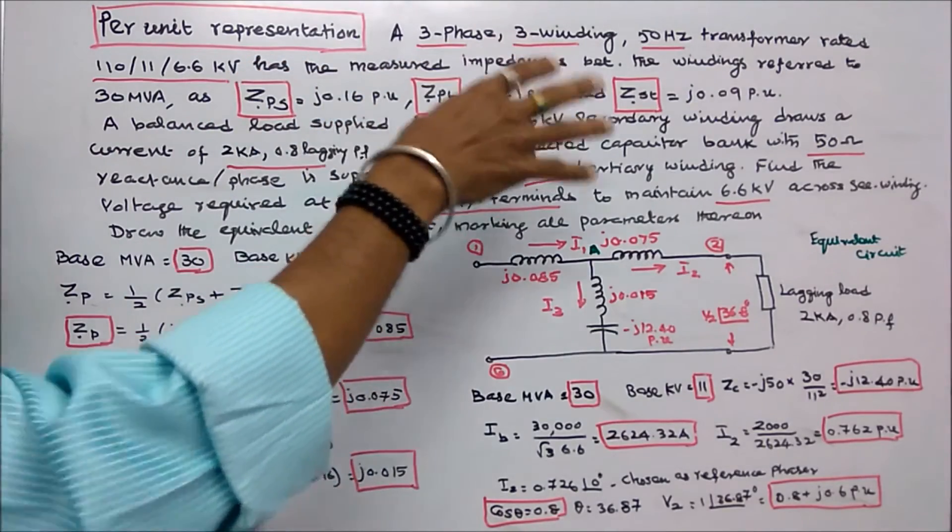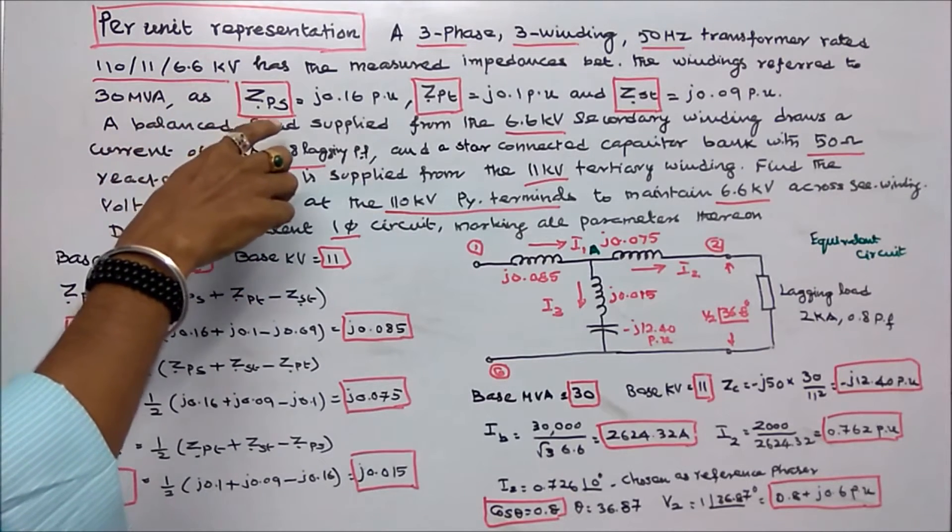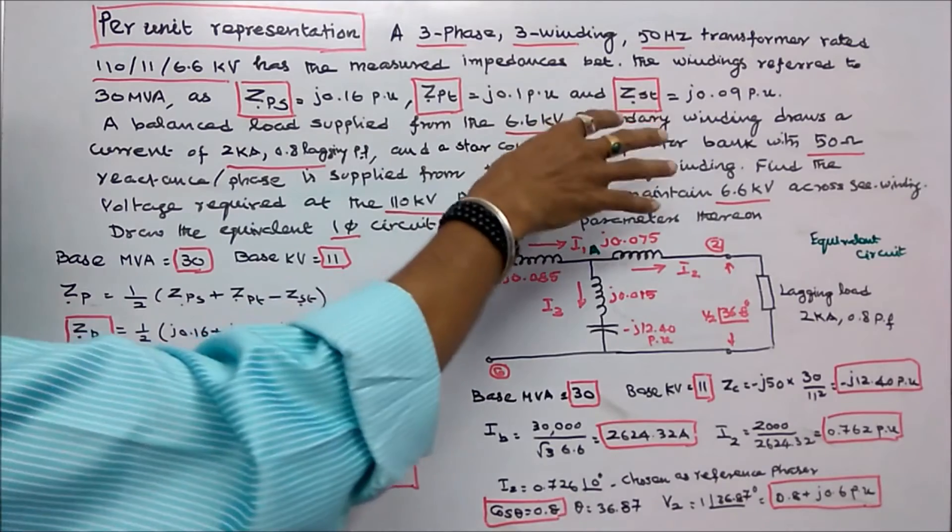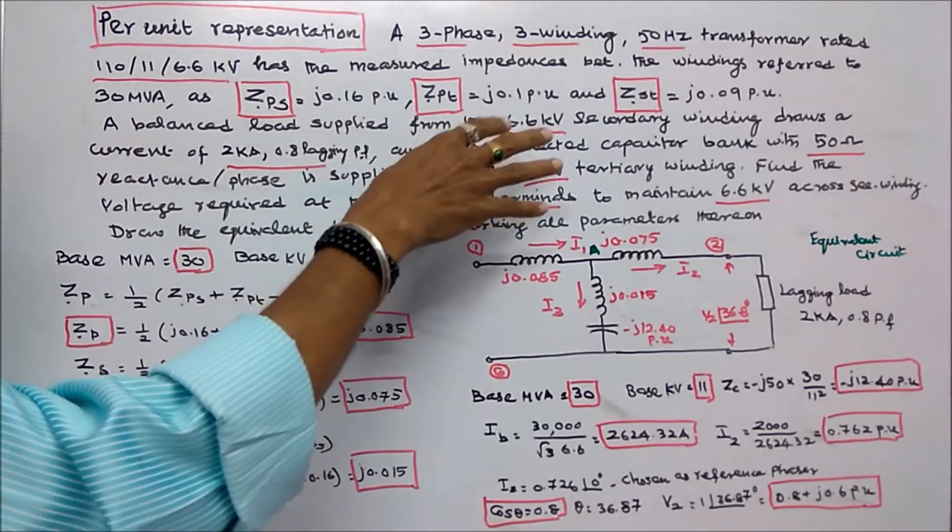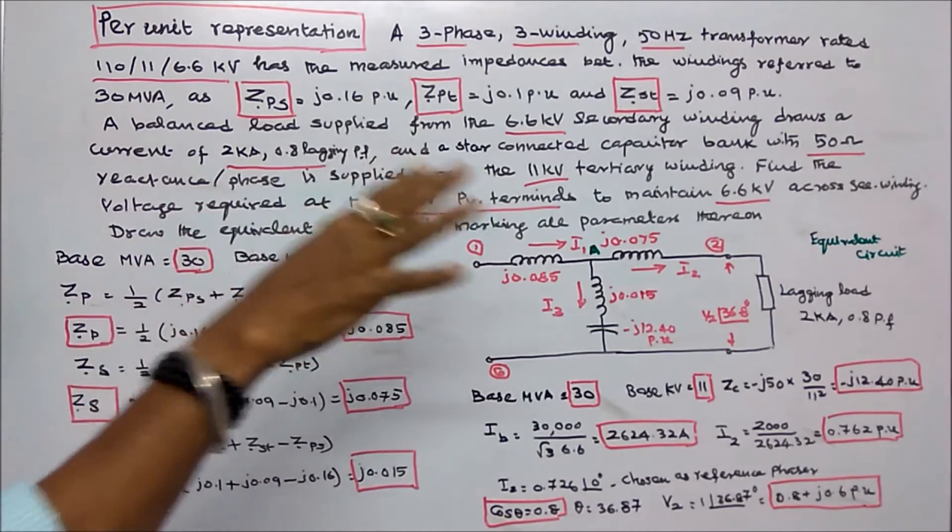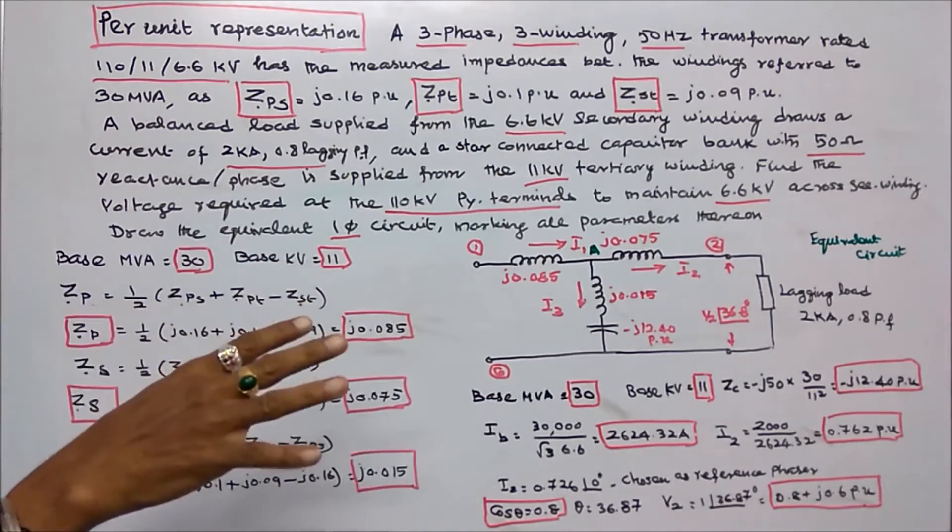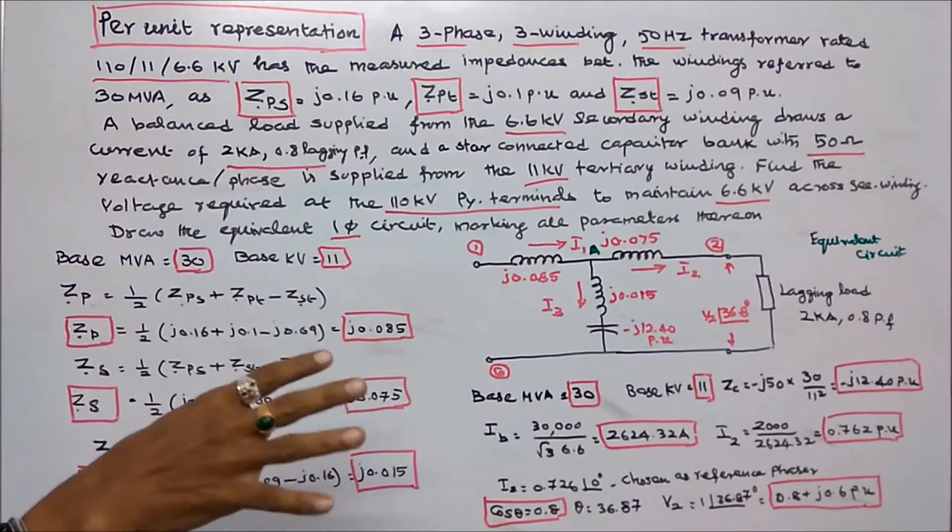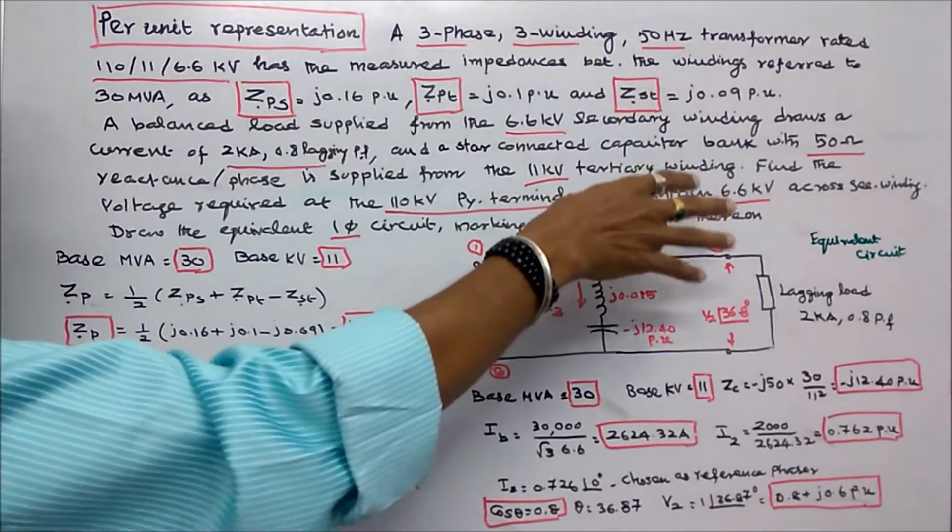The measured impedances between the windings referred to 30 MVA as Z per unit PS is equal to J.16, Z per unit PT is equal to J.1, Z per unit ST is equal to J.09. A balanced load supplied from the 6.6 KV secondary winding draws a current of 2 kA 0.8 power factor lagging. A star connected capacitor bank with a 50 Ohm reactance per phase is supplied from the 11 KV tertiary winding. Find the voltage required at the 110 KV primary terminals to maintain 6.6 KV across secondary winding.